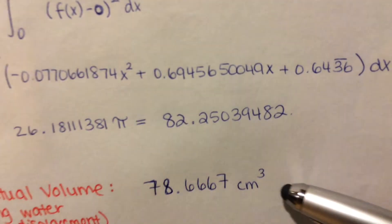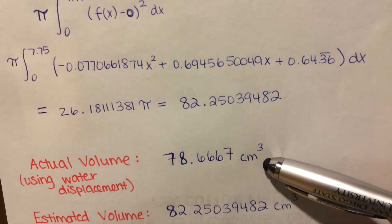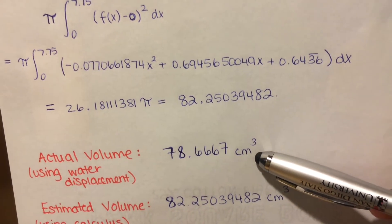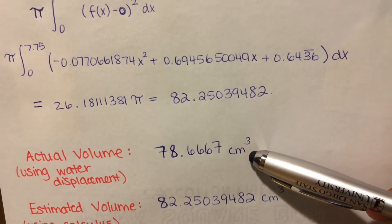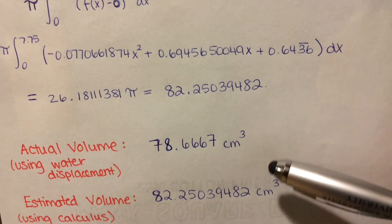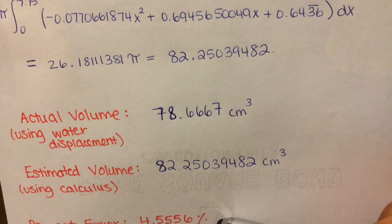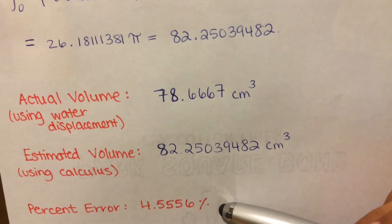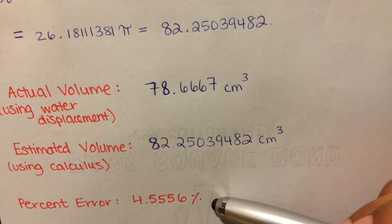This is our actual value that we found earlier. Thus, our percent error is 4.5%.